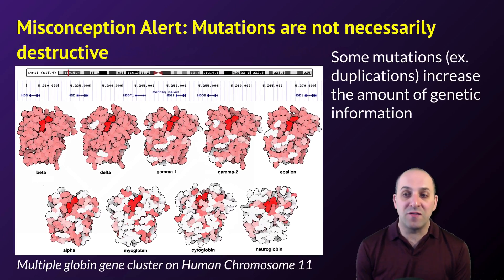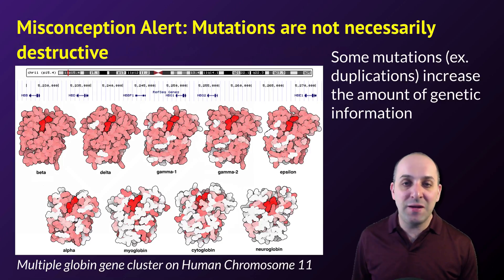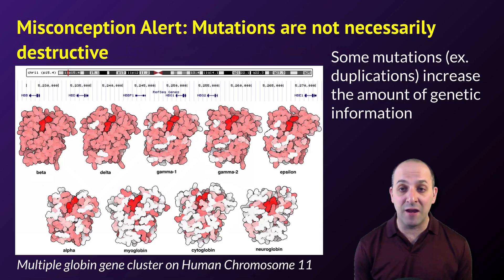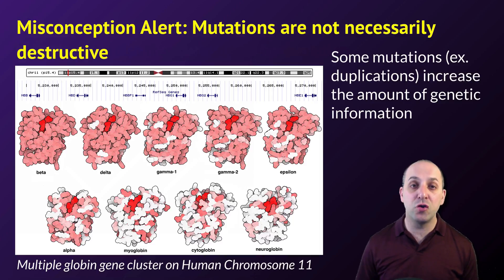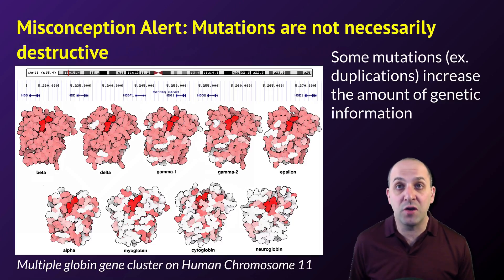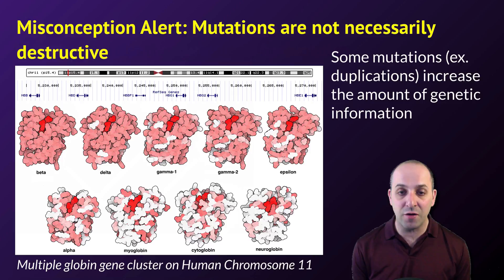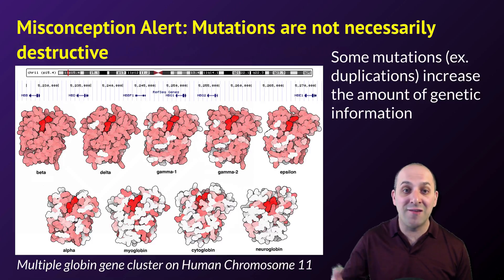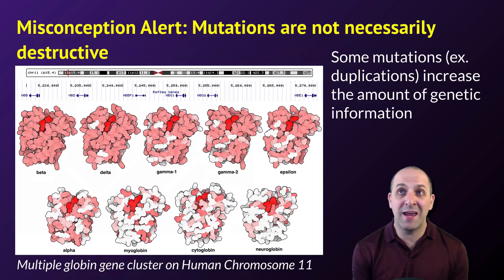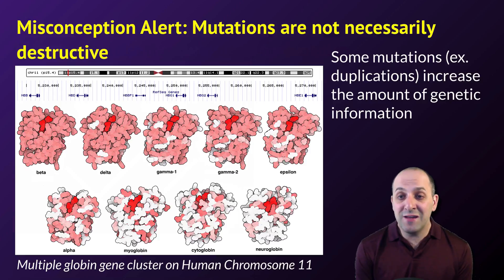Mutations can also increase the total amount of genetic information. The notion that mutations have to be destructive is a common misconception. Duplication mutations in genes can produce extra copies of genes, which can serve as the starting point for new proteins as those duplicated genes acquire mutations and diverge in structure and function. This chart shows all the different globin genes on human chromosome 11 — each came from the same ancestral source gene that's been duplicated over evolutionary time, with descendant genes acquiring variations leading to new structures and functions. So while mutations can be harmful, they can be silent or beneficial, ultimately driving the evolution and wide diversity of life on Earth.